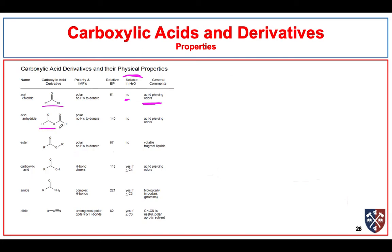Acid anhydrides are also quite reactive. Like the acid chlorides, the carbonyl carbon is very electrophilic. These things are also polar, they're hydrogen bond acceptors but not hydrogen bond donors. They're not very water soluble but can be readily dissolved in organic solvents. They're a little less reactive than acyl chlorides, but still quite reactive. Esters are polar in the ester region, but depending on the R groups — if you have long R groups — these things can be quite nonpolar and actually good solvents.